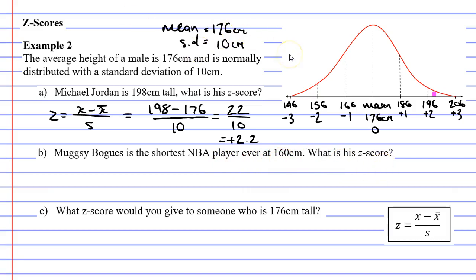So looking at our bell curve, 160 centimeters is somewhere between negative 1 and negative 2. Once again, we're going to have to use the formula. The formula being Z equals X, our score, minus X-bar, our mean, over s, our standard deviation.